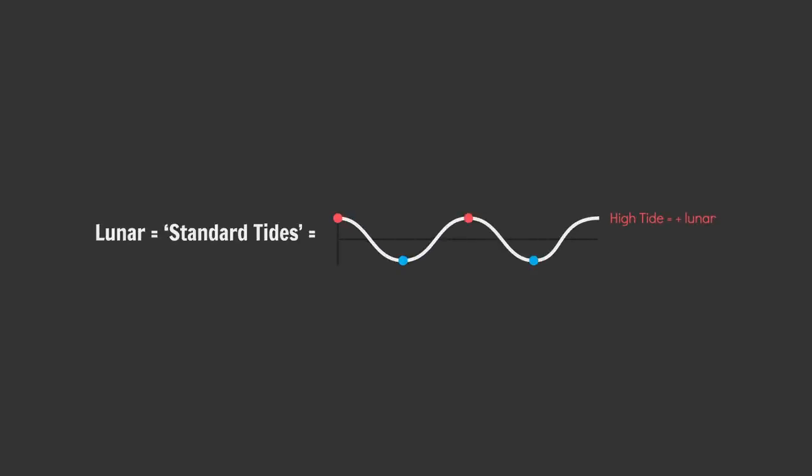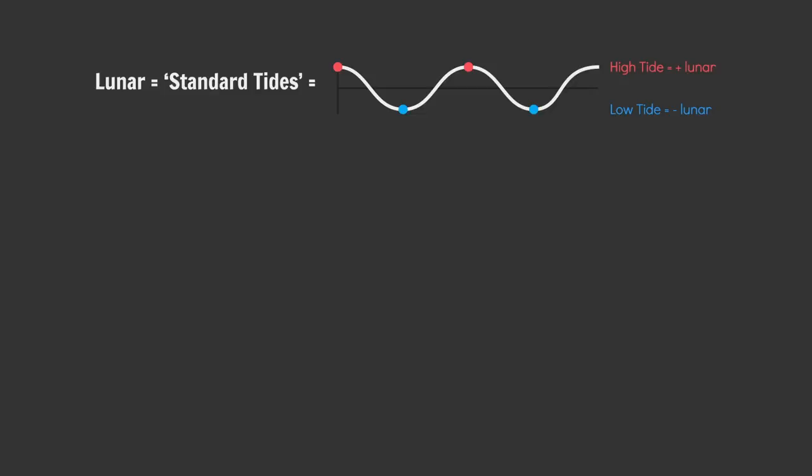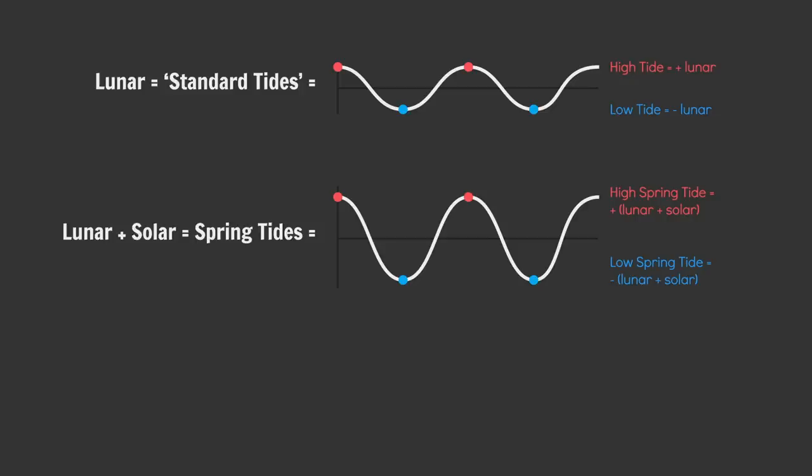Take the output from the lunar tide equation as your standard tides. Positive, high tides. Negative, low tides. Sum the lunar and solar tidal equation outputs to get your spring tides. Positive, high tide. Negative, low tide.